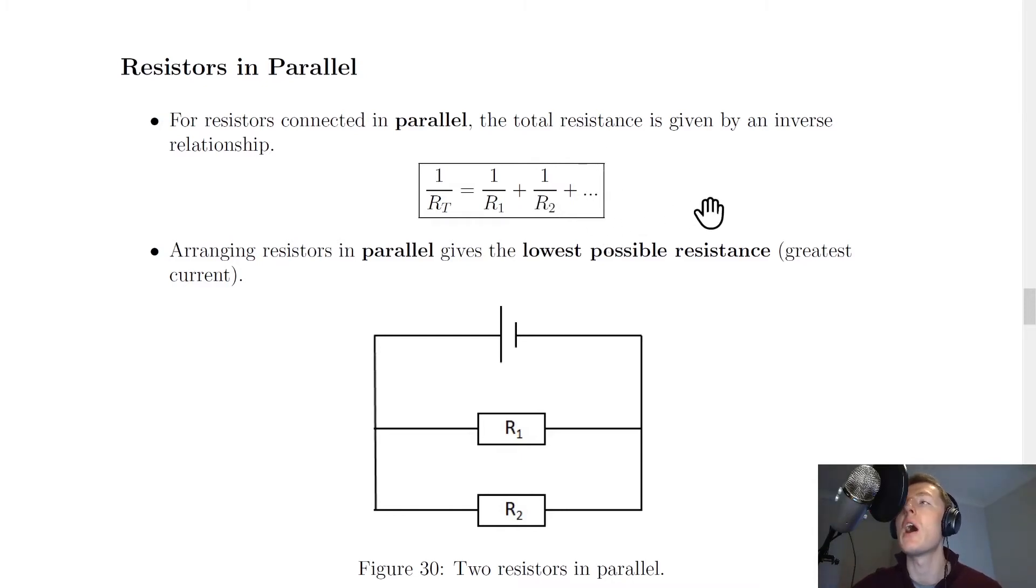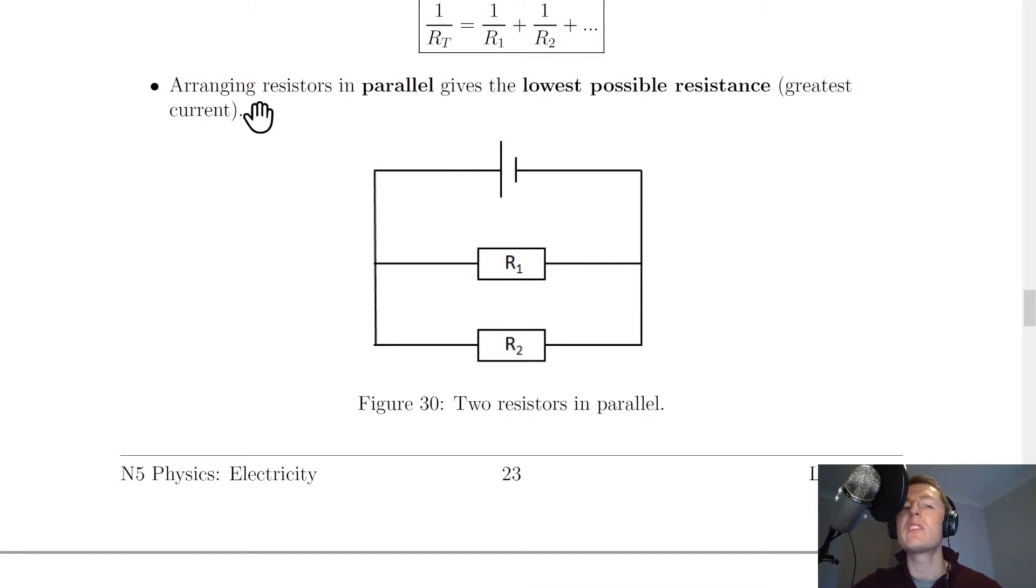It also says here that arranging resistors in parallel gives the lowest possible resistance, i.e., the greatest current. So the more resistors that you add in parallel, that's going to decrease the total resistance, which in turn will increase the total current. Because remember, current and resistance have an inverse relationship—they're basically opposites.